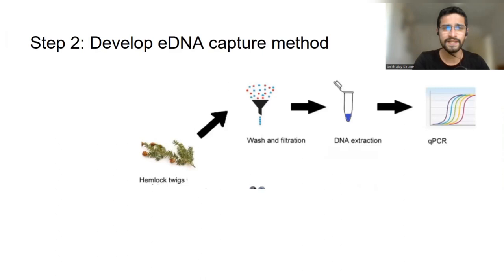Step two is to develop methodology to capture this DNA from the environment. So here we take hemlock foliage, we take a few twigs, we wash them with water, then we filter this water with a very fine pore-sized filter, which will capture all the cells and all the DNA that has been shed. And then we isolate and purify this DNA, and we can then analyze it using molecular methods, in this case qPCR.